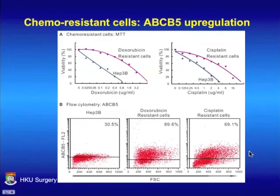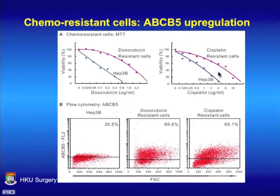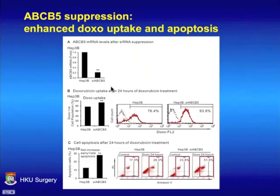Liver cancer cells were plated out and selected under chemodrugs. Doxorubicin-resistant and cisplatin-resistant cells showed an increase in IC50 by 10 to 16-fold compared to parental cells, and both chemoresistant populations showed increased ABCB5 expression. ABCB5 levels were then suppressed by siRNA approach, and decreased ABCB5 levels resulted in increased doxorubicin uptake and increased cell apoptosis.